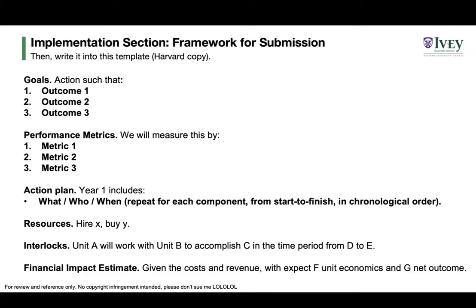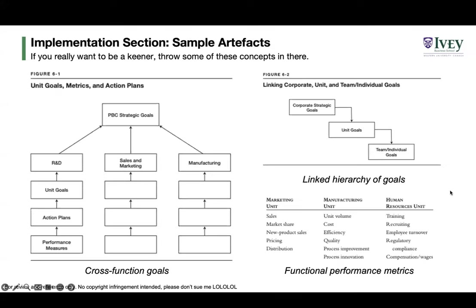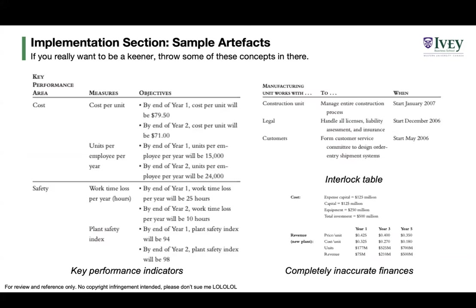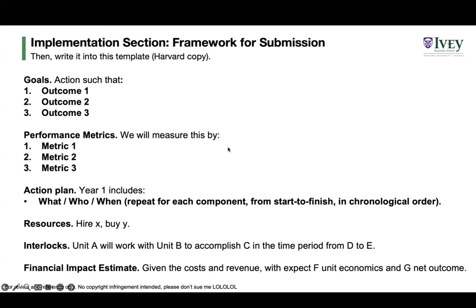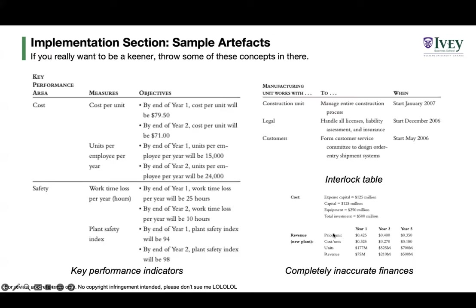I'll send you the PDF of these slides. You can paste them into your implementation section, replace the outcomes and metrics, and create a basic action plan. It doesn't have to be fancy — you can write out what, who, and when for the action plan, a basic resource management plan, and interlock. You can align goals across different verticals and levels of hierarchy, look at performance metrics segmented by functions like marketing, manufacturing, and HR, and define key performance indicators by area.